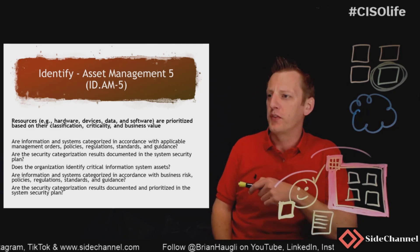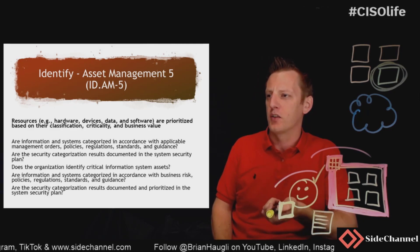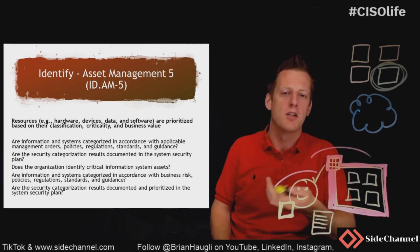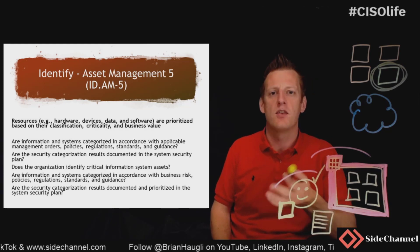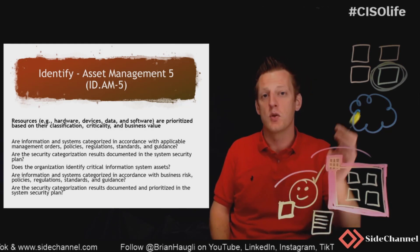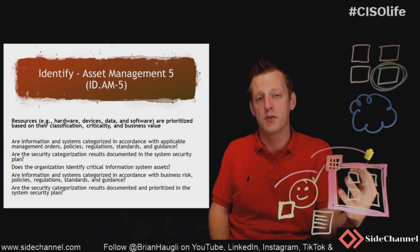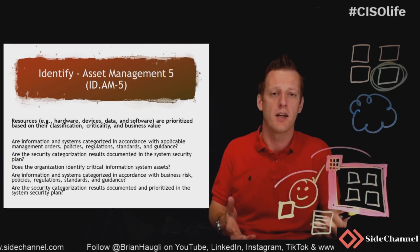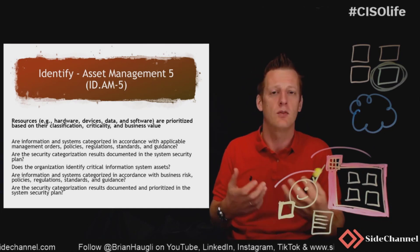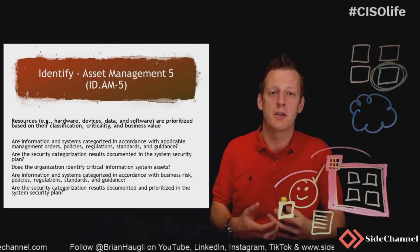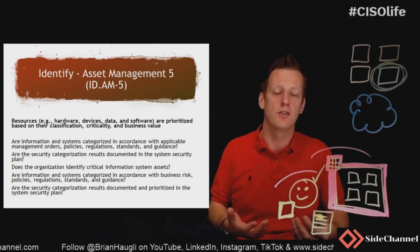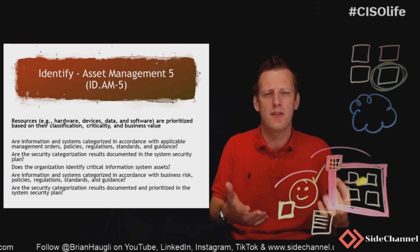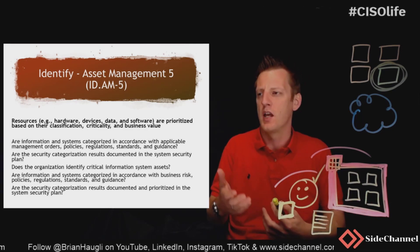Are the systems actually categorized according to management's intent and their understanding? Do you have that risk management view that establishes what the criticality is for different types of assets, or intellectual property, or systems, or business — whatever it is? Do you have that within the organization?